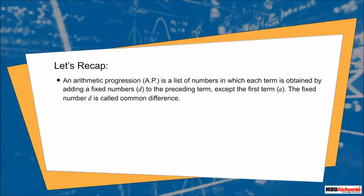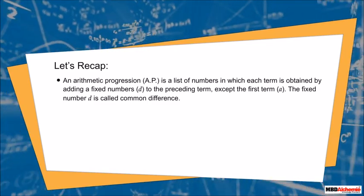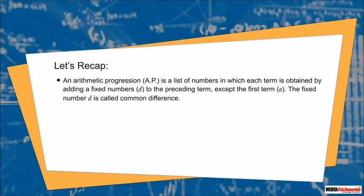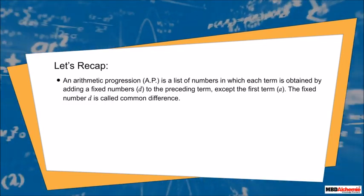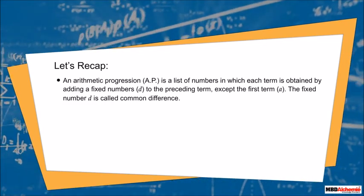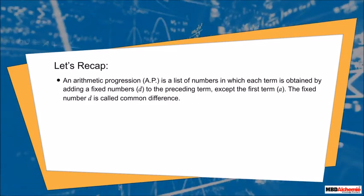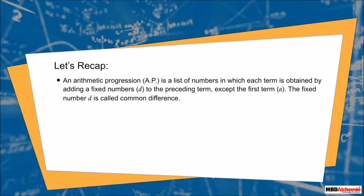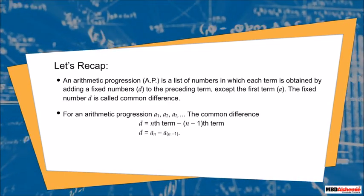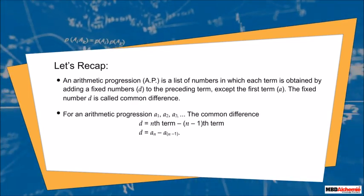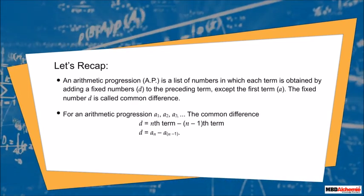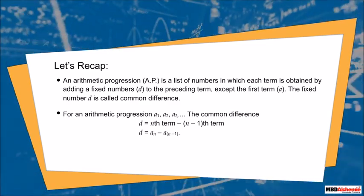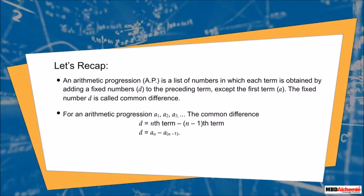Let's recap. An arithmetic progression AP is a list of numbers in which each term is obtained by adding a fixed number, D, to the preceding term except the first term, A. The fixed number D is called common difference. For an arithmetic progression A1, A2, A3, and so on, the common difference D is equal to nth term minus n minus 1th term.